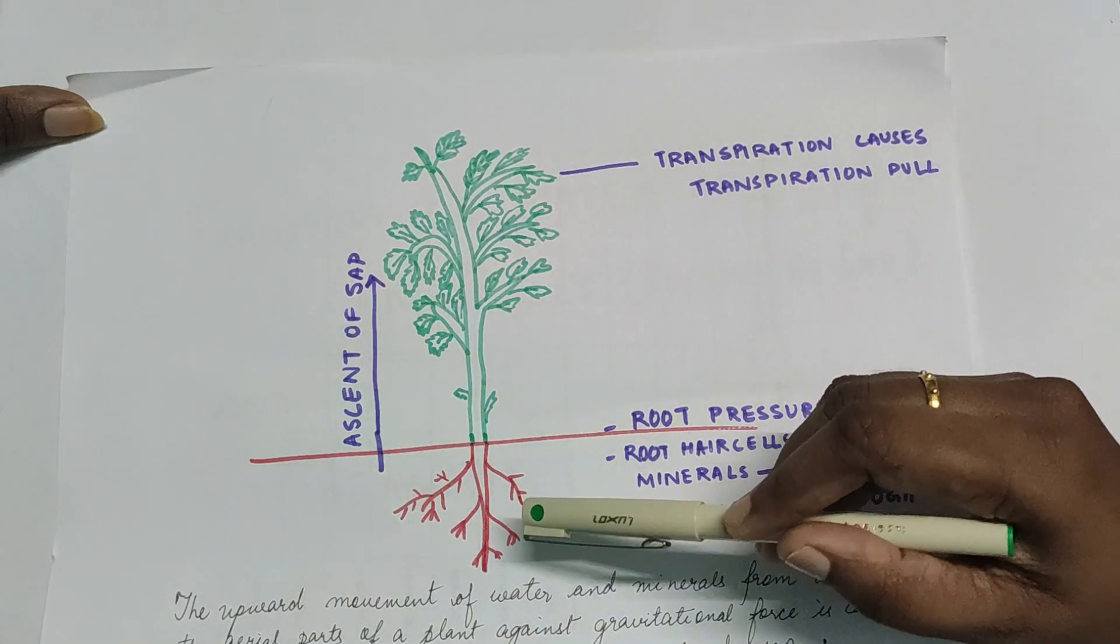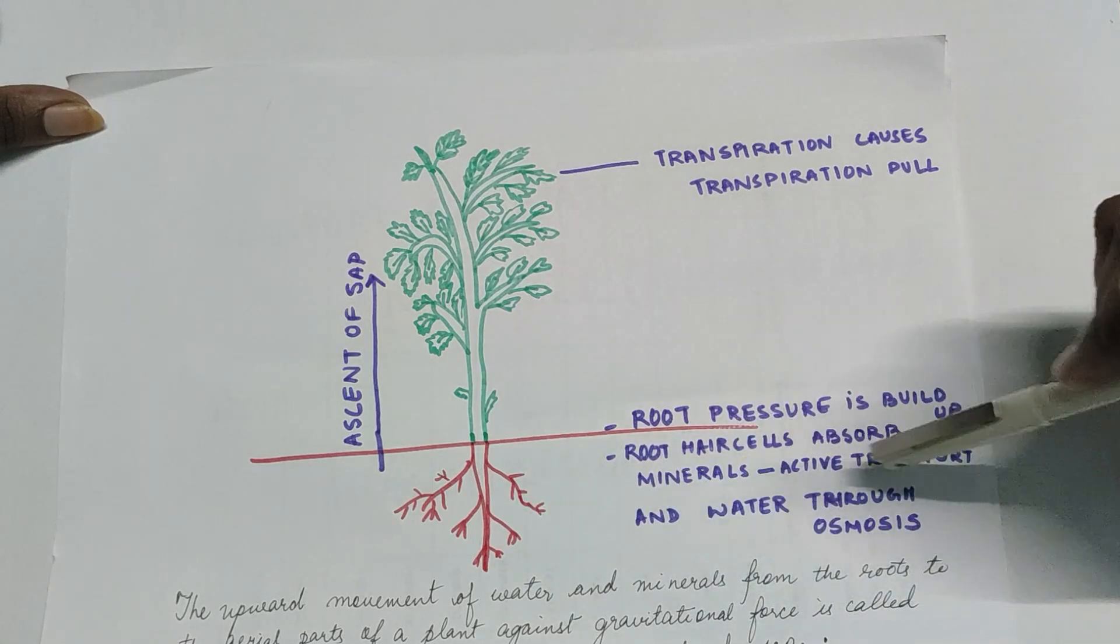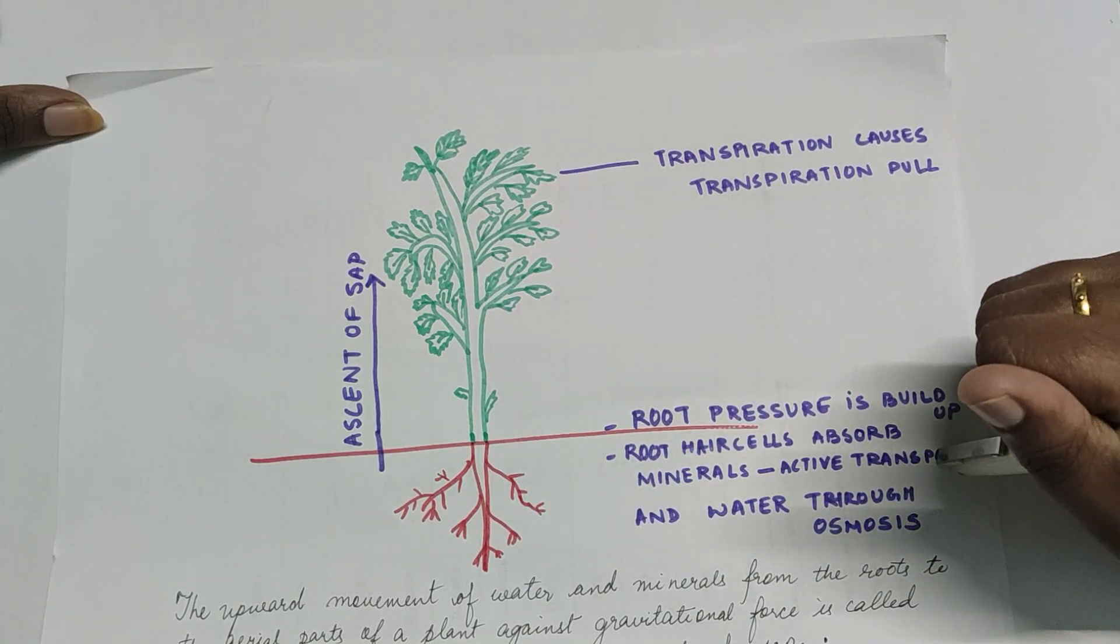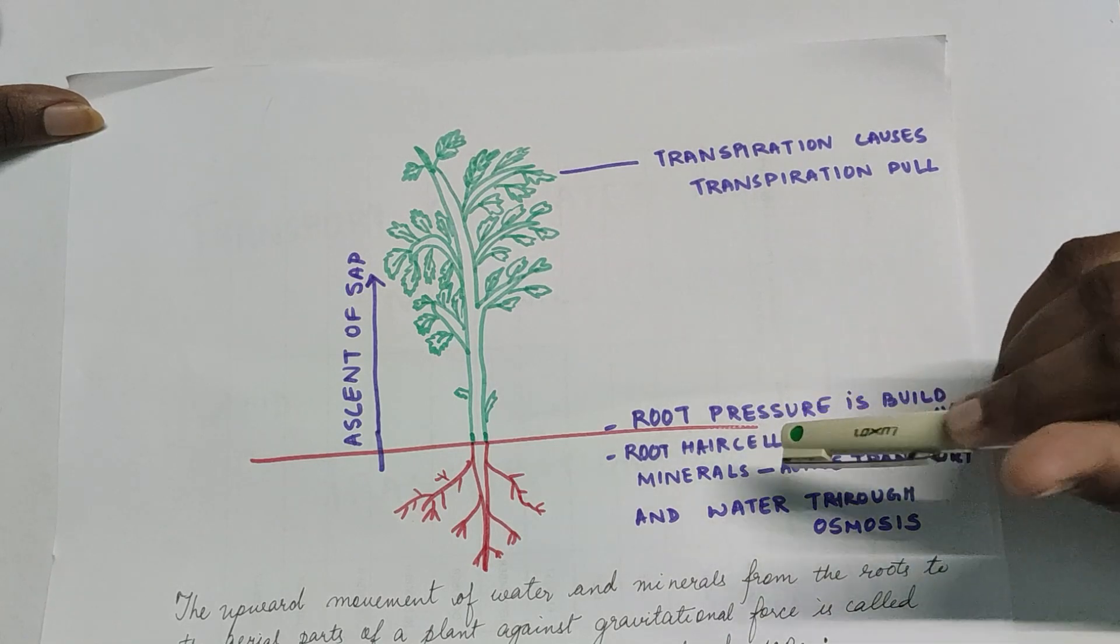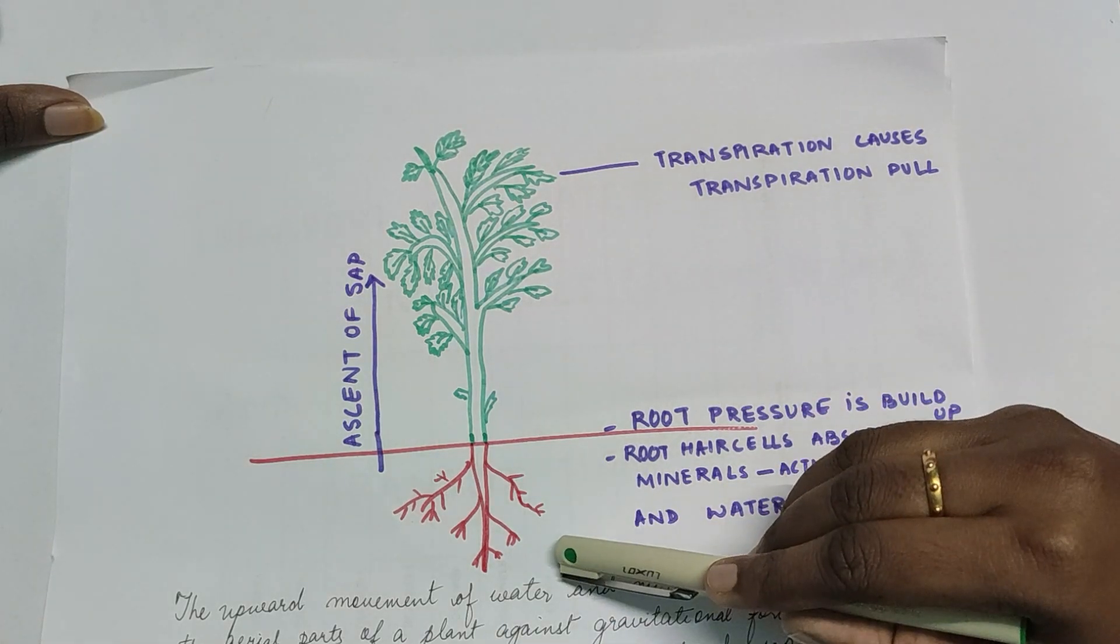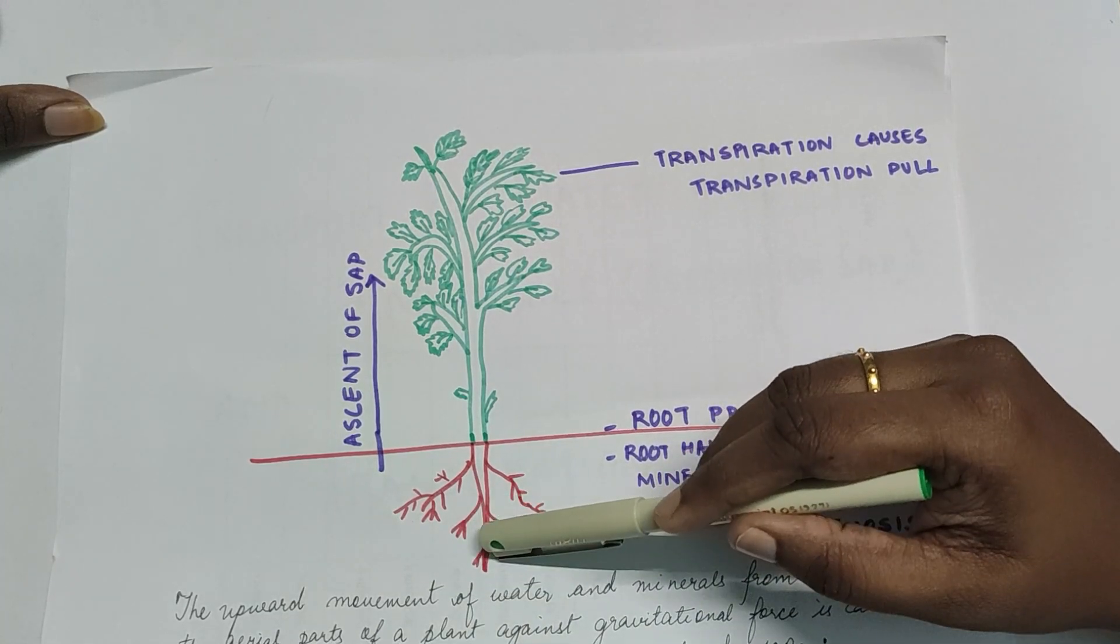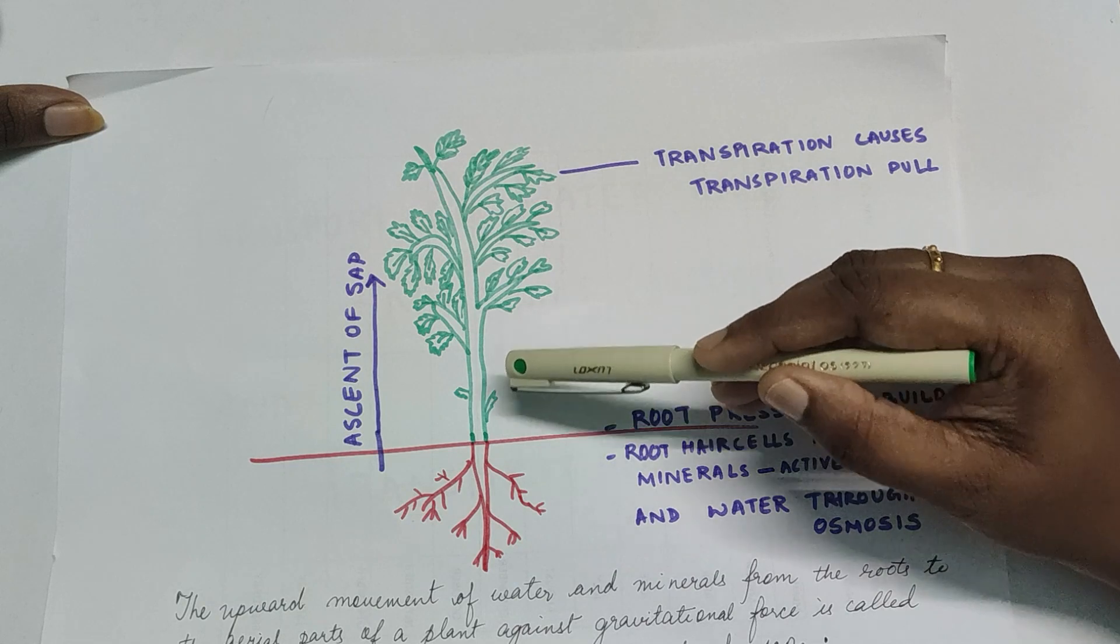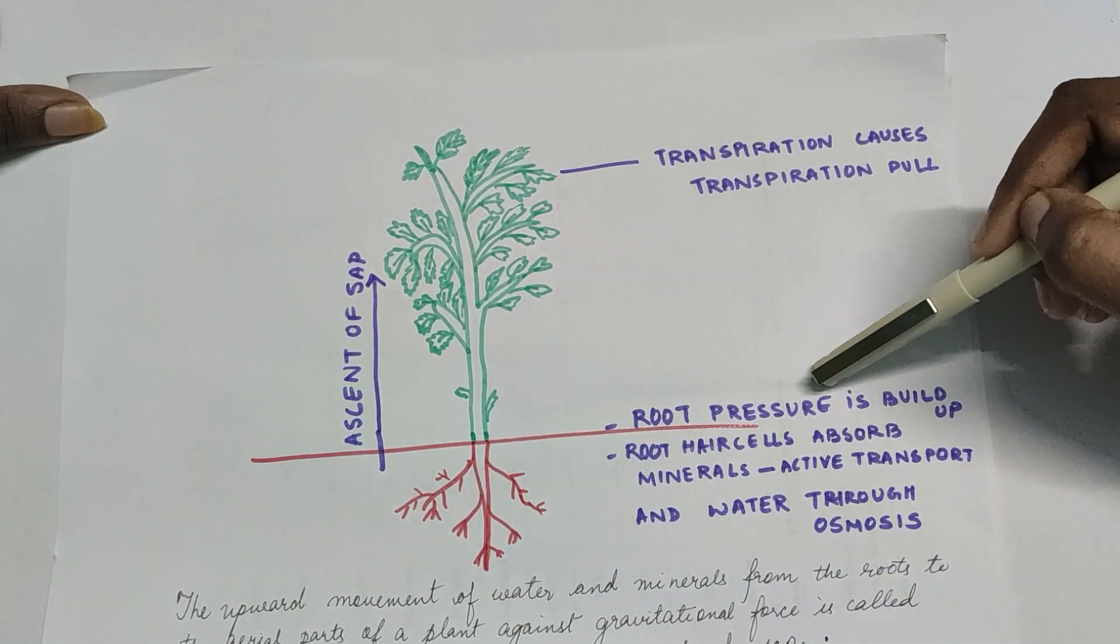So there will be a difference in concentration of water and minerals in the roots. This will help to draw in more water and minerals towards the stem. There will be a pressure developed in the roots which we are calling as root pressure.